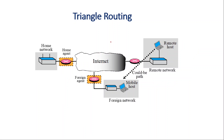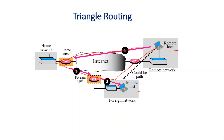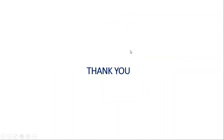The second inefficiency is triangle routing, which is the moderate case. This occurs when the remote host and the mobile host are in different networks. The remote host sends a packet to the home agent, the home agent sends it to the foreign agent, and then it is relayed to the mobile host. This is not as inefficient as double crossing. As you can see, a triangle is formed — that is why it is called triangle routing. It is inefficient because the packet travels two sides of the triangle instead of just one.